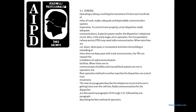General operating rules involving the movement of trains over hundreds of miles of track must be adequate and dependent on communication systems. To properly control trains, a trained dispatcher needs adequate communication. Special systems for the dispatcher telephone circuit are also an early stage of operation in transportation and railroad service, including TRS, if needed for railroad communication.